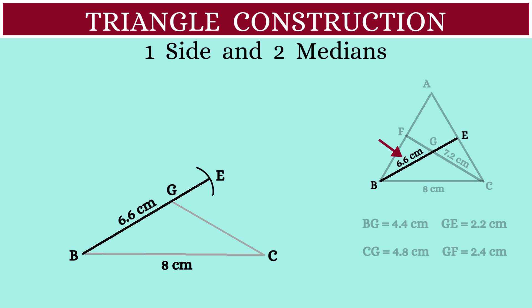Let's draw an arc here and extend CG meeting the arc at point F. CF is the other median which was of length 7.2 centimeters.